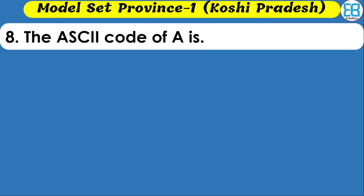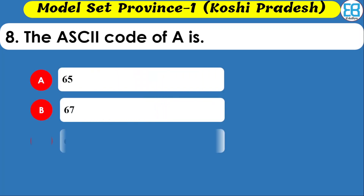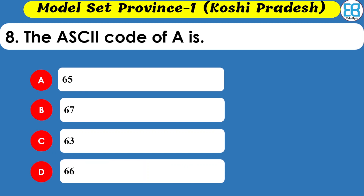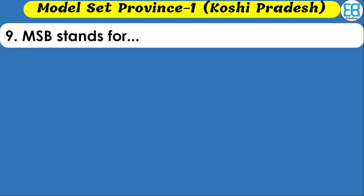What is the ASCII code of 'A'? ASCII stands for American Standard Code for Information Interchange. The options are 65, 67, 63, and 66. The correct option is 65.